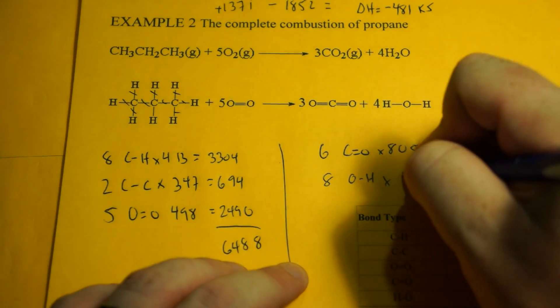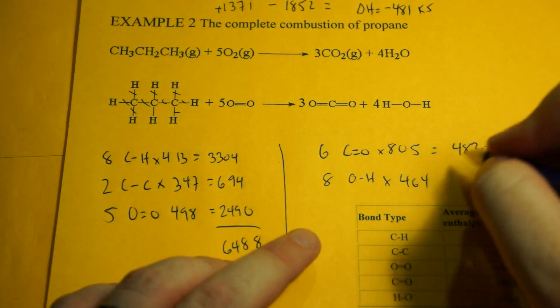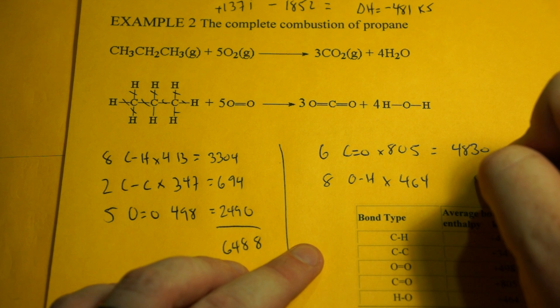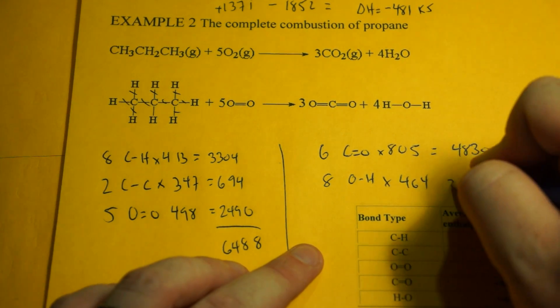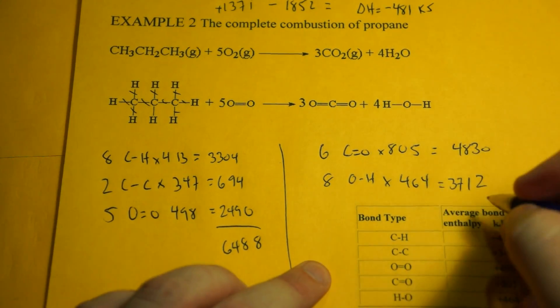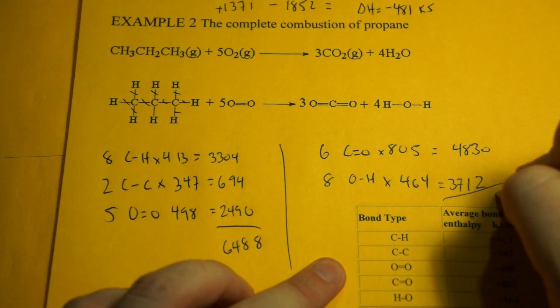But that means we have 8 OHs. So 8 times 464, that's going to be 3,712. And when we add this up, we get 8,542.